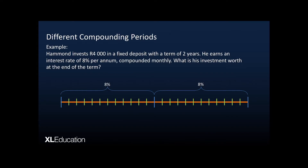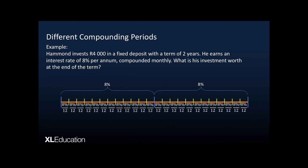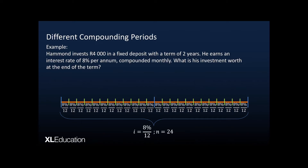We've got to take our year and break it up into 12 months. In the first month we can't charge a whole 8% — we've got to charge 8% divided by 12. We've taken our annual rate and turned it into a monthly rate by dividing by 12. This continues so that in each of the 24 months we charge 8%/12. Our compounding period, which is monthly, matches the interest rate, which is now a monthly rate. So our interest rate becomes 8%/12 and our number of periods is 24.